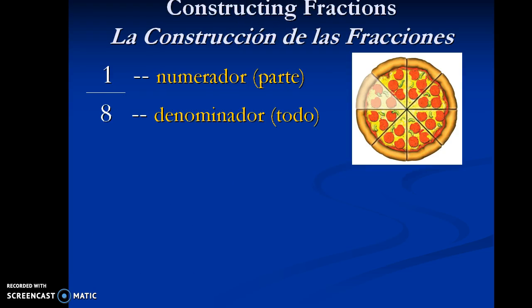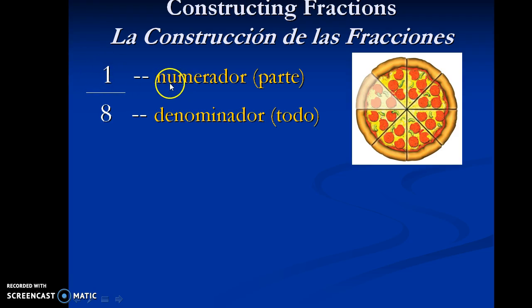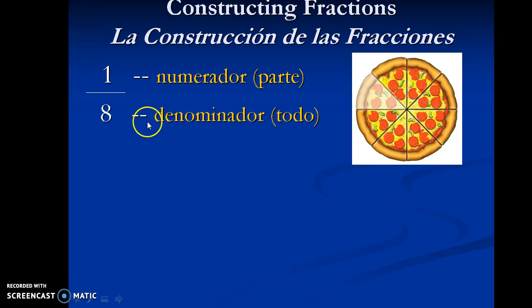So how do we construct these fractions? Well, as we can see with the example one eighth, we put the part of the pizza that we were eating in the numerator, in the top part of the fraction. The numerador. And the total number of pieces goes down here in the denominator, or the denominador. This is where the total goes.